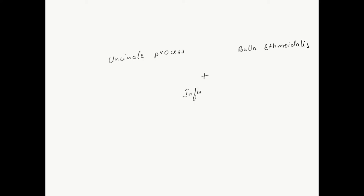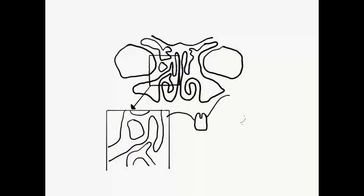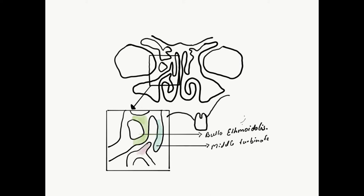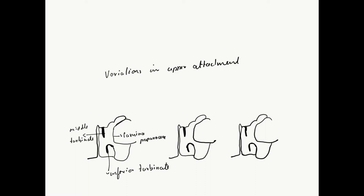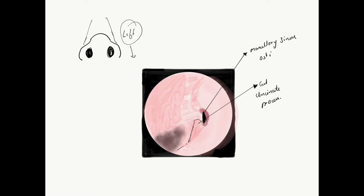The combination of the uncinate process, bulla ethmoidalis, and the infundibulum forms the ostiomeatal complex, which is vital for the drainage of frontal, maxillary, and anterior ethmoidal sinuses. The uncinate process shows variation in its superior attachment. The inferior attachment is constant, attached to the inferior turbinate. Superiorly it may be attached to the lamina papyracea, causing the frontal sinus to drain lateral to it, or to the cribriform plate where it will drain into the infundibulum, or in rare circumstances to the middle turbinate.